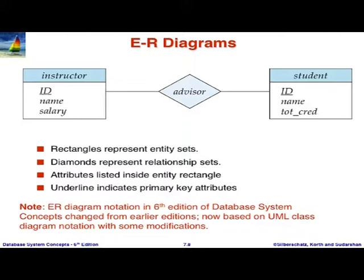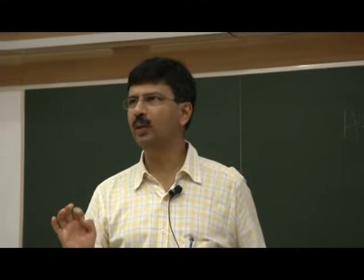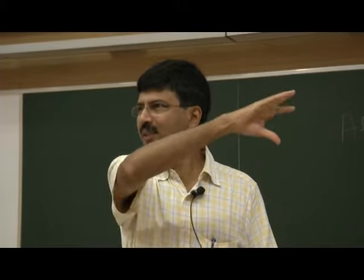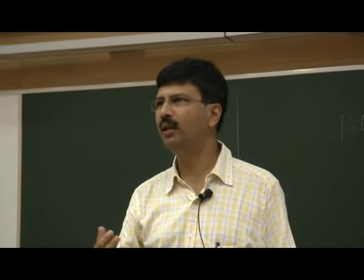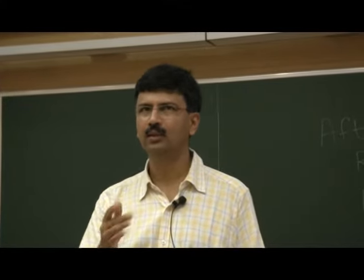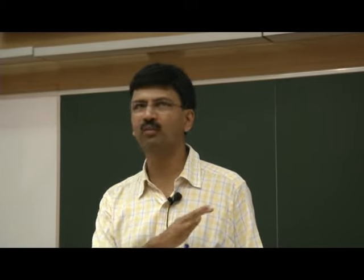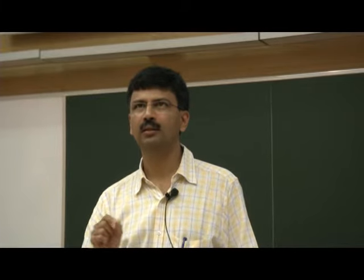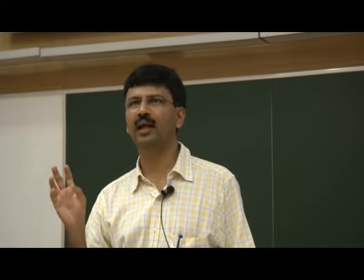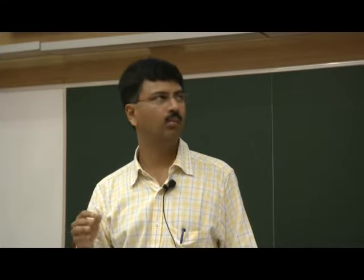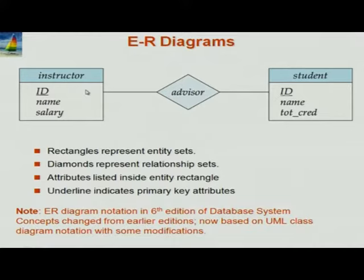The notation we use is not strictly UML — UML class diagrams have other annotations about methods, public, private, and so on, which we are not using. There is a notion of a primary key, which we underline, and in the UML class diagram this is not focused on. So it looks like UML class diagrams but it is not exactly the same. Relationship sets also have attributes — for example, we may want to keep track of when a student last met their advisor. In the new notation, attributes of relationships are placed in a box connected to the relationship diamond with a dashed line.